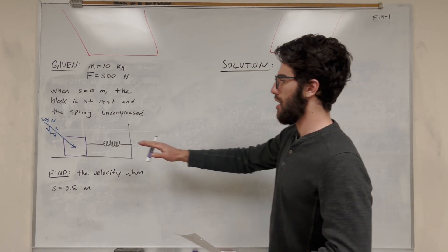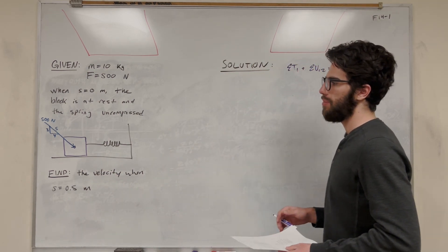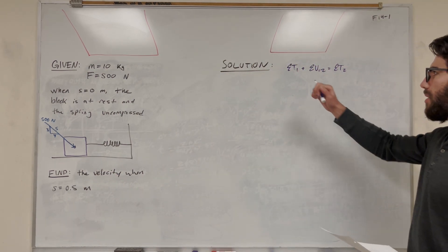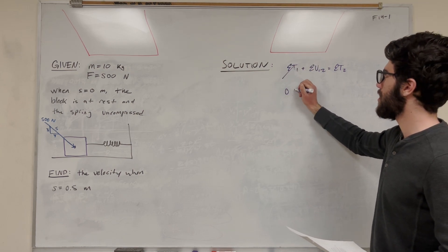Our initial state is going to be here when the spring is uncompressed, we're not in any motion, and our final state is going to be when the spring is compressed and we're moving. Like I said, we're starting at rest and the spring is uncompressed. There's probably not going to be any initial energies, so we can set that T equal to 0.